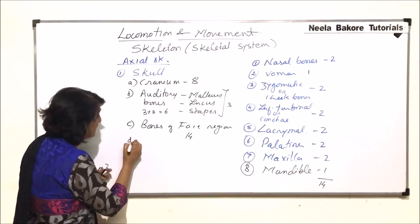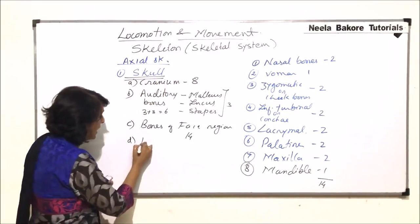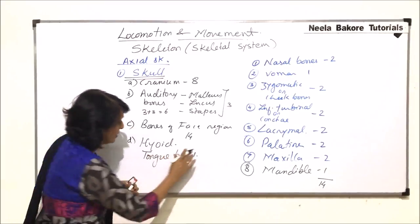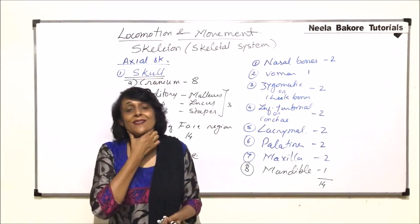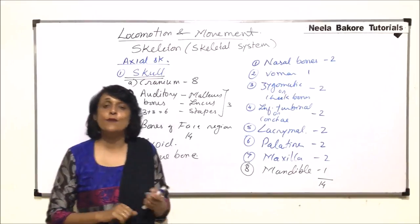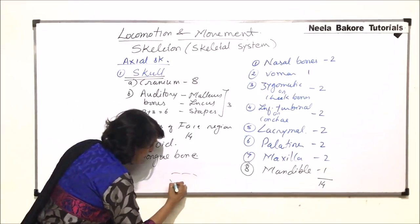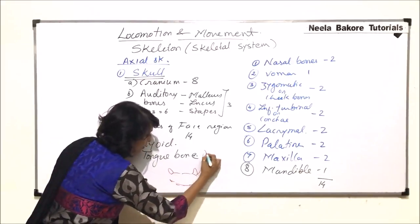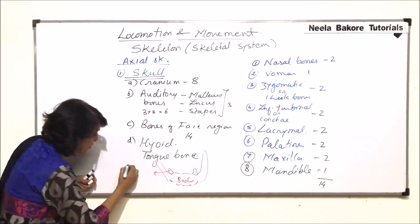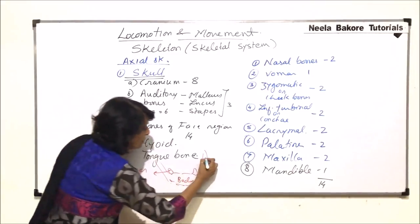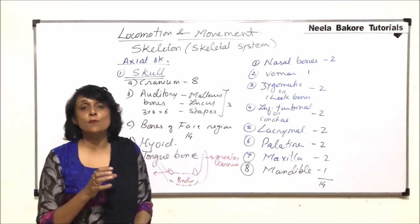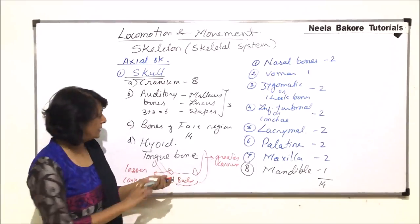The last bone in the skull part of the axial skeleton is the hyoid bone, also known as the tongue bone. It is present just beneath the tongue in the lower jaw region, fitted at the base of the tongue. It has three main parts: the body, smaller projections called the lesser cornua, and larger projections called the greater cornua. This bone provides the attachment site for the tongue muscles. The hyoid is one in number.